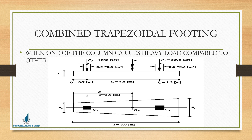Combined trapezoidal footing is provided when one column carries a heavy load compared to another. For example, if p1 is 1200 kilonewtons and p2 is 2000 kilonewtons, p2 is heavier than p1, so the dimensions under p2 are greater than under p1. If you provide a rectangular combined footing, it will be uneconomical because the load from p1 is smaller and p2 is larger — providing the same thickness would waste concrete and resources. So that time we go for a trapezoidal footing.